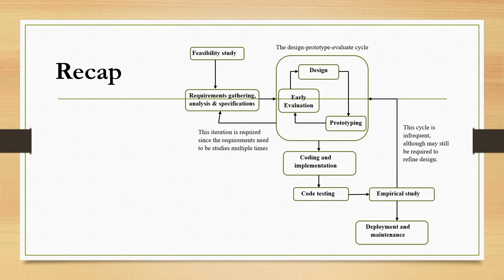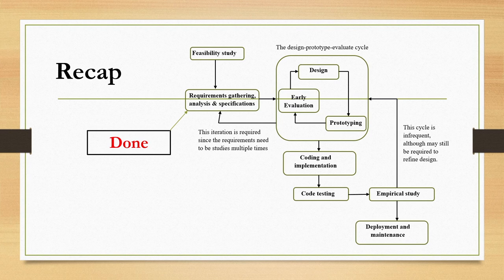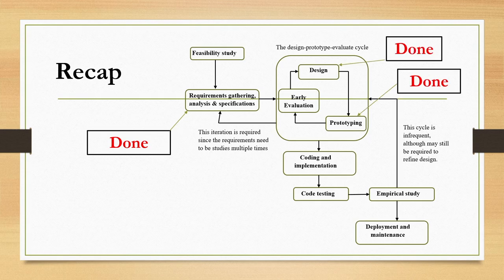The interactive system development life cycle consists of several stages. As you can see here, the life cycle consists of a requirement gathering stage, design prototype evaluation stage, coding and implementation stage, code testing stage, empirical study stage, and deployment and maintenance stage. Among them, we have already learned about requirement gathering, analysis and specification stage, design stage, prototyping stage, and evaluation stage.